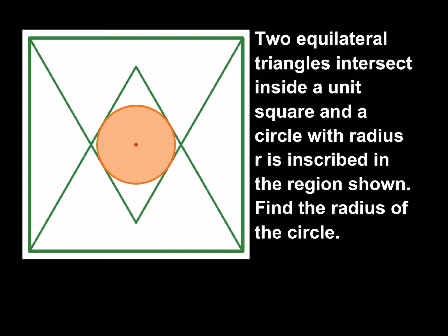We have two equilateral triangles that intersect inside a unit square, and a circle with radius r is inscribed in the region shown. Find the radius of the circle.